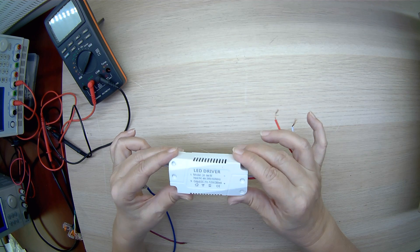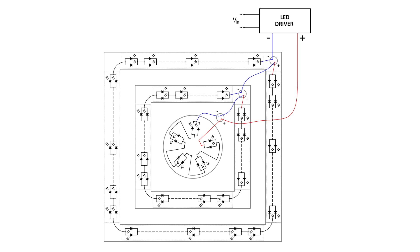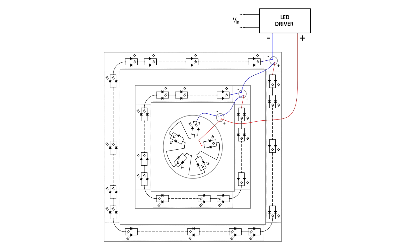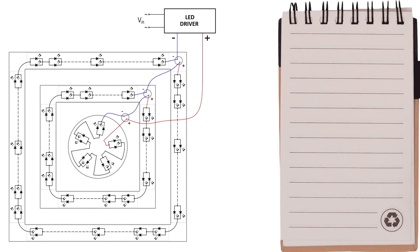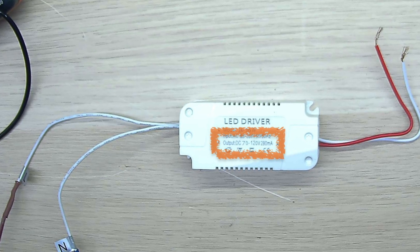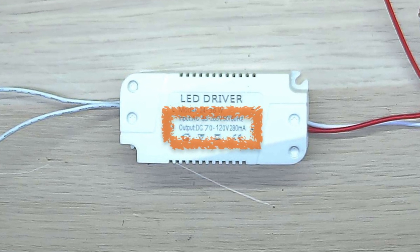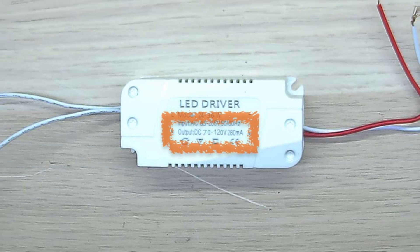We have now obtained the operating voltage for all elements of the light fixture and can carry out a simple calculation of the total voltage to select a driver. The total operating voltage is the sum of 16.5V, 23.8V, and 48V — summing all these values we get 84V. We choose an LED driver with a voltage range from 70 to 120V and a rated current of 280 mA. It suits us perfectly.